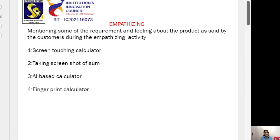This is the first stage, the empathizing stage, mentioning some of the requirements and feelings about the product as said by the customers during the empathizing activity: screen touching calculator, second one taking screenshot of sum, third one AI-based calculator, fourth fingerprint calculator.